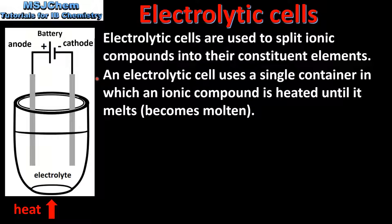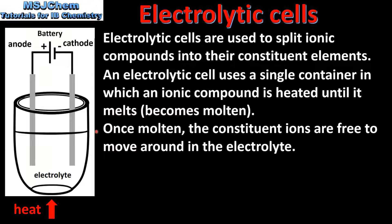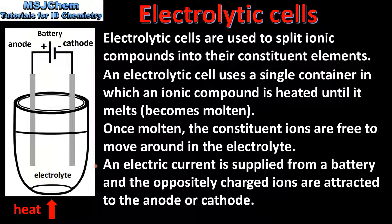An electrolytic cell uses a single container in which an ionic compound is heated until it melts. Once molten, the constituent ions are free to move around in the electrolyte. An electric current is supplied from a battery and the oppositely charged ions are attracted to the anode or cathode.